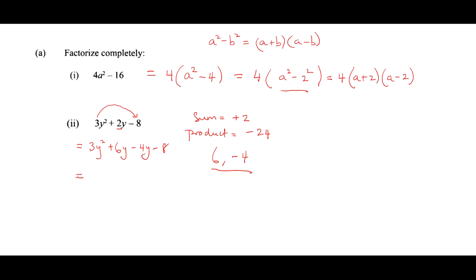Then we are going to factorize by grouping. We can pull out 3y, so we will end up with 3y times y plus 2. Then we can pull out minus 4, and we'll end up with minus 4 times y plus 2. And this will be 3y minus 4 into y plus 2.